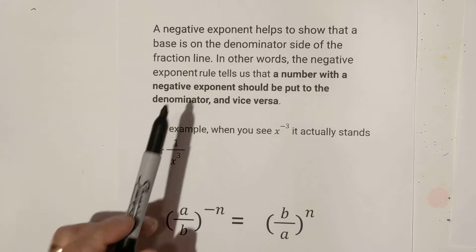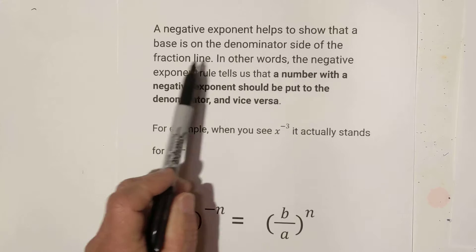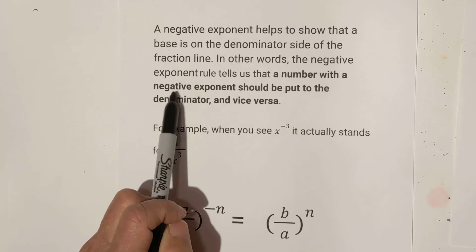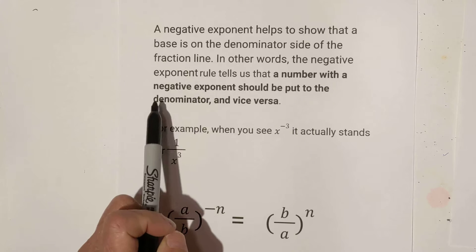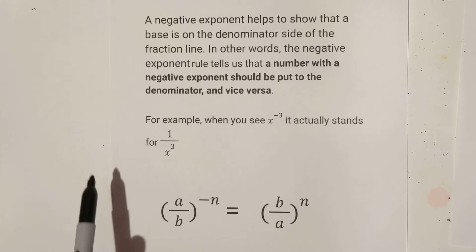Okay, the negative exponent rule states a negative exponent helps to show that a base is on the denominator side of the fraction line. In other words, the negative exponent tells us that a number with a negative exponent should be put to the denominator and vice versa.